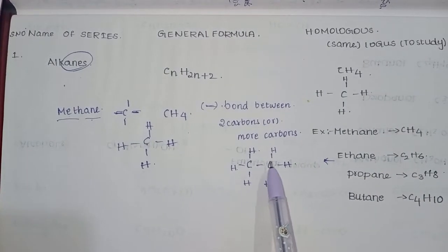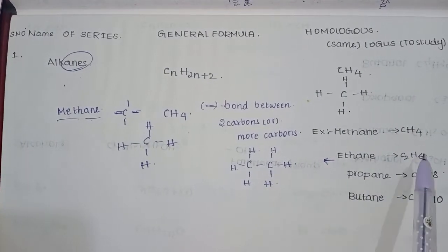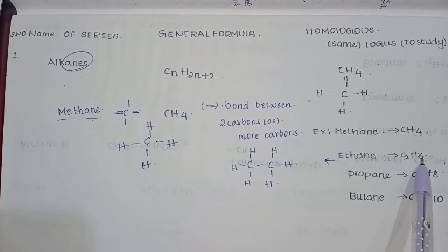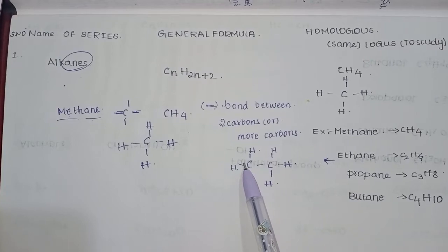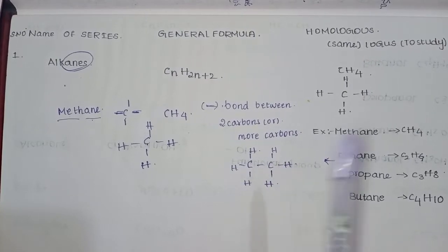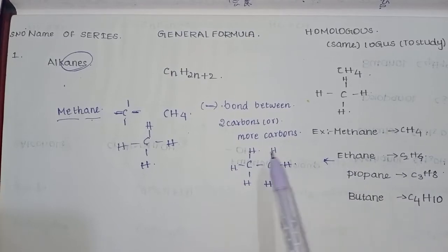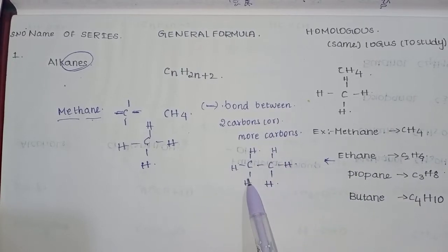Now count - one, two. Two carbons. And here, general formula is C2H6, six hydrogens. The hydrogens are only single bonds. Carbon and carbon are single bond. Count one, two, that is C2. And six hydrogens: one, two, three, four, five, six.